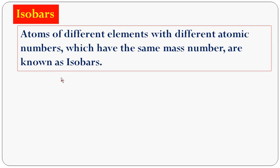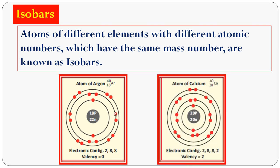The next topic is isobars. Isobars are atoms of different elements with different atomic numbers but the same mass number. For example, argon (symbol Ar) has atomic number 18 and mass number 40, while calcium (symbol Ca) has atomic number 20 and mass number 40. These are different elements with different atomic numbers but the same mass number 40, so they are called isobars.